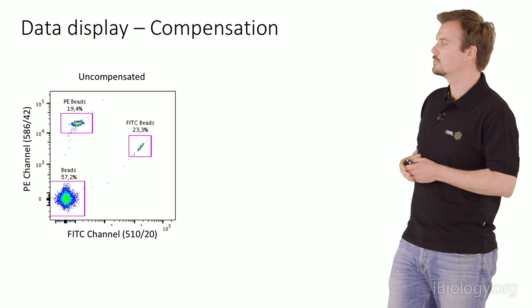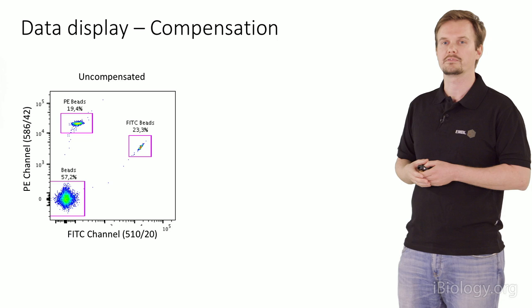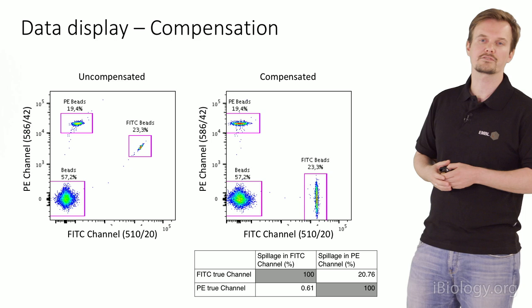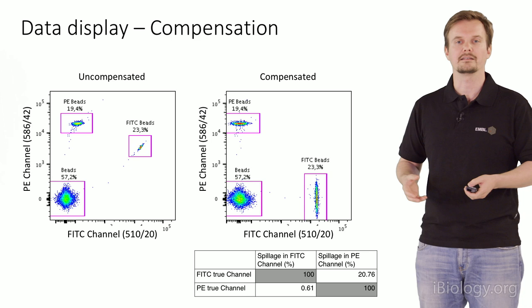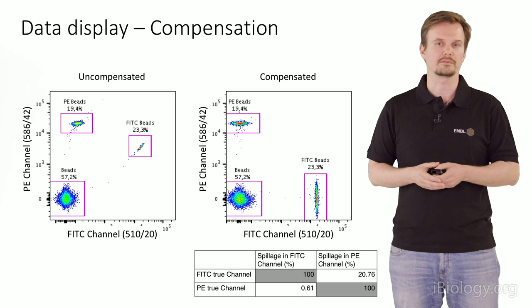When we have a multicolor panel — say PE and FITC beads together — we calculate compensation values for each pair and create a so-called compensation matrix, which is applied to all recorded events. On an analyzer, you can always adjust compensation values if you notice a deficiency. But honestly, if you can set up compensation correctly at the time of measurement, that's probably the best approach.